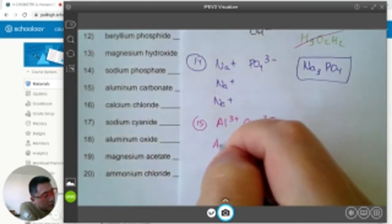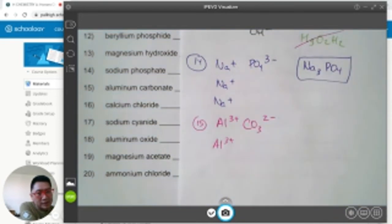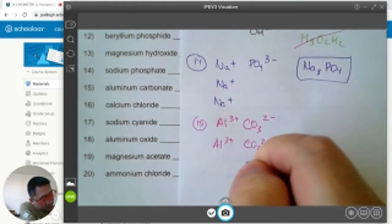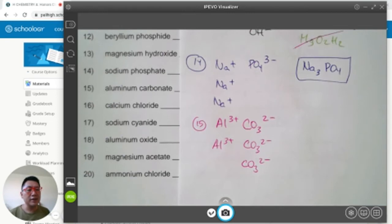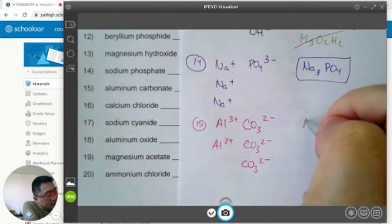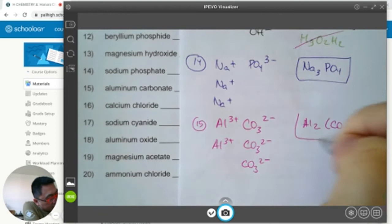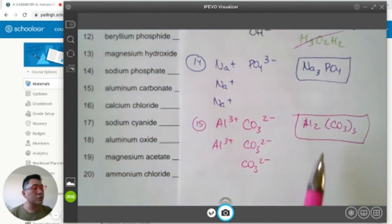If I had two aluminums, each one being positive 3, that would be a positive 6 charge. If I had three carbonates, each one being negative 2, that would add up to negative 6. Aluminum carbonate is Al2(CO3)3. Two aluminums and 3 carbonates. Don't distribute the 3 into the carbonate. Yes, that is technically 3 carbons and 9 oxygens, but we don't write that. We're not going to distribute that, not in these formulas.